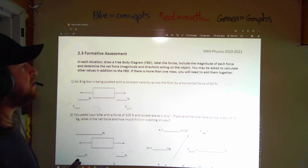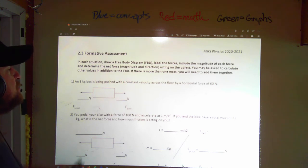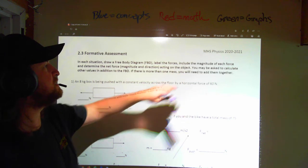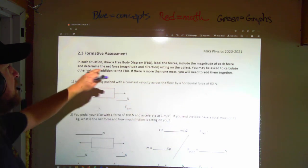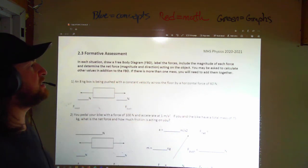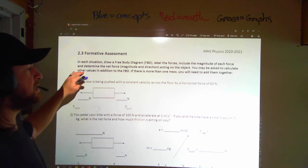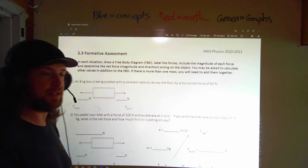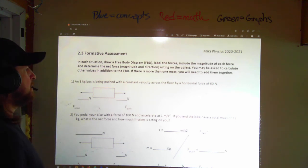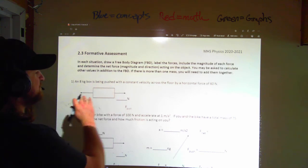So let's dive into it. In each of these situations below, we have an FBD. We're going to label forces, include the magnitude of each force, and determine the net force acting on each object. We might need to calculate other values at some point in this process. So let's take a look at this first one.